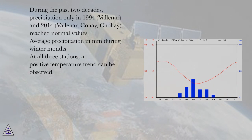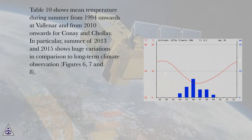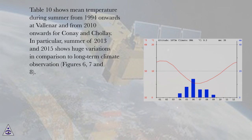At all three stations, a positive temperature trend can be observed. Table 10 shows mean temperature during summer from 1994 onwards at Vianna, and from 2010 onwards for Cone and Chale. In particular, the summers of 2013 and 2015 show large variations in comparison to long-term climate observations shown in Figures 6, 7, and 8.